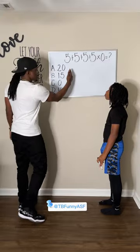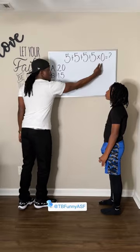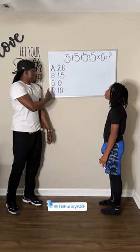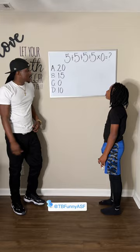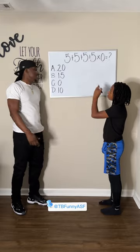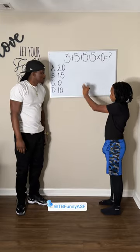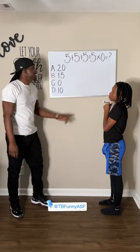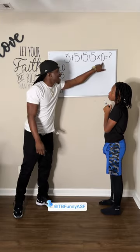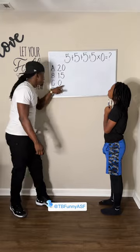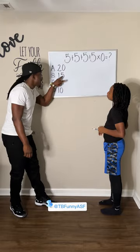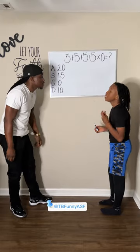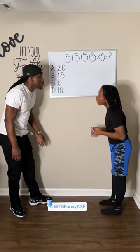All right smart guy, let's see if you can solve this equation right here — the answer is one of these. Which one: A, B, C, or D? B, 15. Bro, anything times zero is zero, it's not 15. How do you get 15? It is 15.